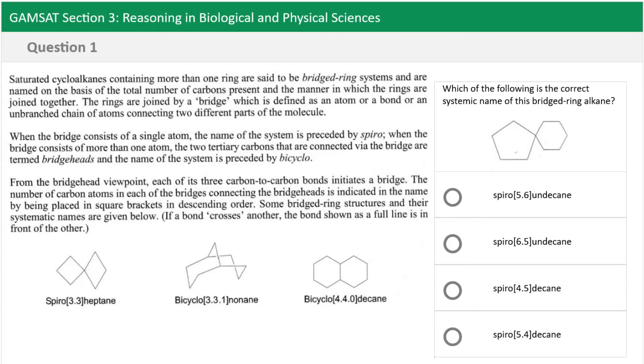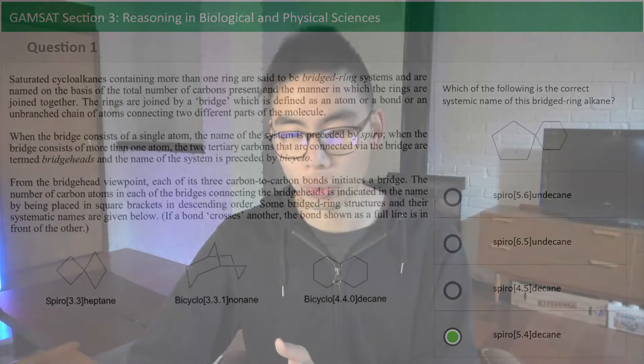So that means the answer should be Spiro 5 4 decane because the numbers are in descending order.